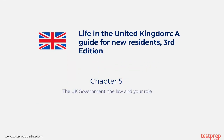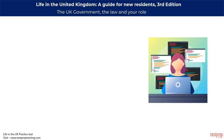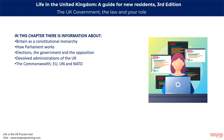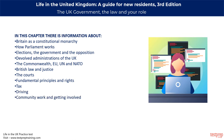The next chapter of this course is the UK government, the law, and your role. In this chapter, you will learn how the UK is governed, the Queen's role in the government and her powers, how people are appointed to the two houses of parliament, the specific roles of the speaker and cabinet, and your rights to vote and stand for election. Topics include Britain as a constitutional monarchy, how parliament works, elections, the government and the opposition, devolved administrations, the Commonwealth, EU, UN and NATO, British law and justice, the courts, fundamental principles and rights, tax, driving, community work, and getting involved.